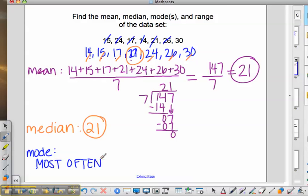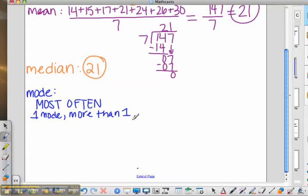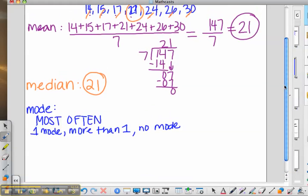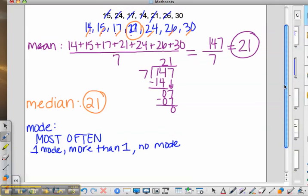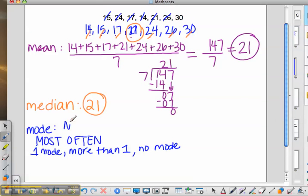A data set can have one mode, more than one mode, or no mode. So looking back at our data set, each number only occurs once. Therefore, for this data set, there is no mode.